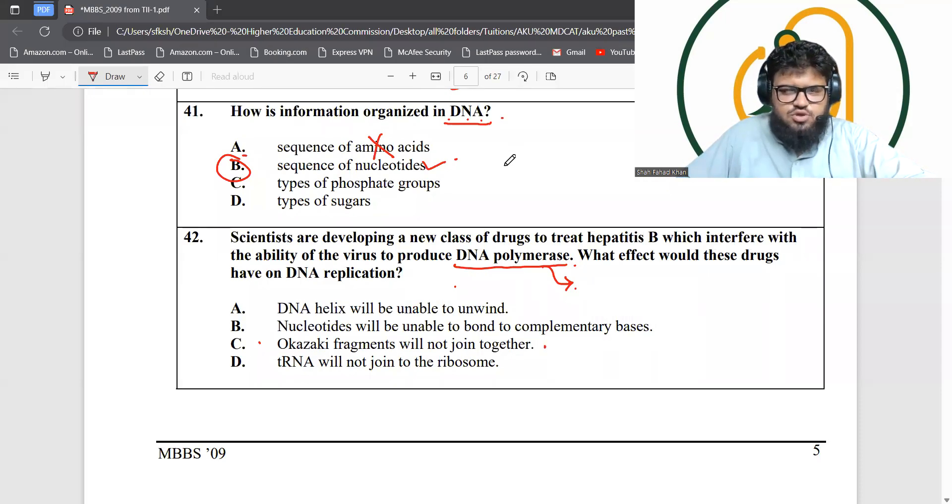Welcome back, guys. Now we are on the next 10 MCQs of this AKU 2009 biology section paper. Question number 41: How is information organized in DNA? DNA is made up of multiple nucleotides that are arranged in a specific sequence. Each sequence carries a specific DNA code. That code is actually the sequence of nucleotides, because that sequence is fixed. So that's the answer.